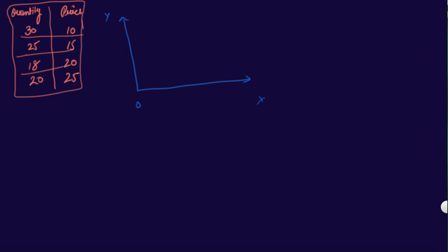This is your table — let's plot it on the graph. Please label your diagrams; I have told you many times and I will repeatedly remind you. So quantity on one axis — let's take a scale of 5, 10, 15, 20, 25, 30.